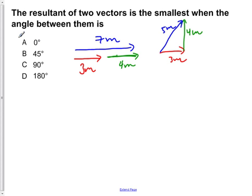The answer at 0 degrees is producing a larger value, so we know A is wrong. B would produce something along the lines of a resultant vector in this direction here, because if we laid the green vector at a 45 degree angle, we would have a resultant vector along this line, which would be greater than 5 meters. So we know that 45 degrees is wrong too.